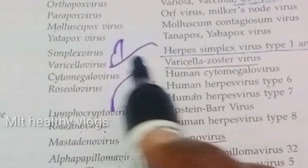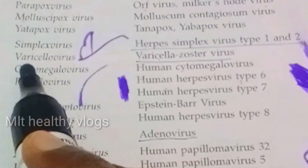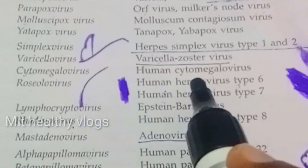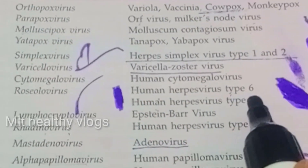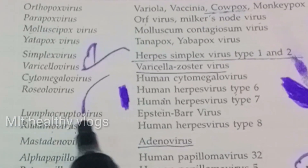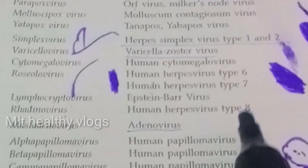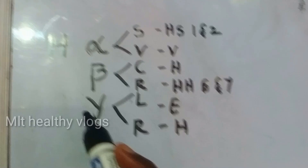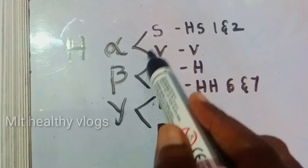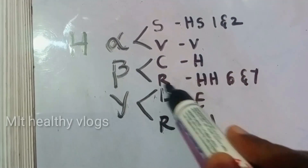Under Simplexvirus, the species are Herpes Simplex Virus Type 1 and Type 2. Varicellovirus species: Varicella-Zoster virus. Cytomegalovirus species: Human Cytomegalovirus. Roseolovirus species: Human Herpesvirus 6 and 7. Lymphocryptovirus species: Epstein-Barr virus. Rhadinovirus species: Human Herpesvirus Type 8. Each genus typically has two genera per subfamily, and one species per genus.